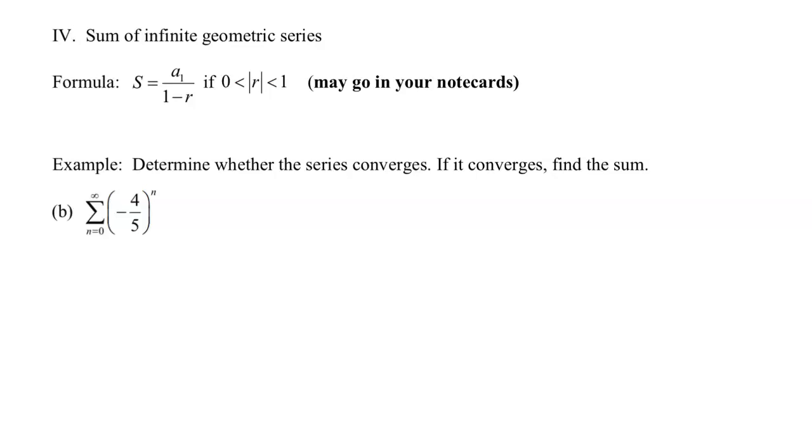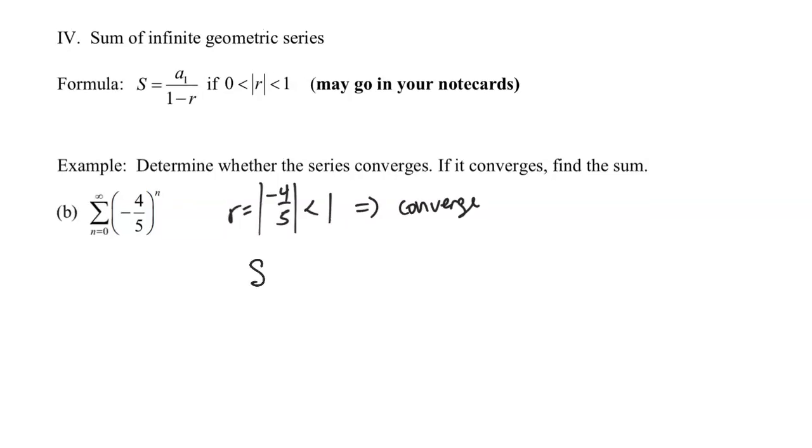Here in example B, this again has the form of a geometric series, and so I can see that the ratio here is going to equal negative 4 fifths. The absolute value of that is definitely smaller than 1, and so that would imply that this series is going to converge. Therefore, we can find the sum, and so the sum is going to equal a sub 1 over 1 minus r.